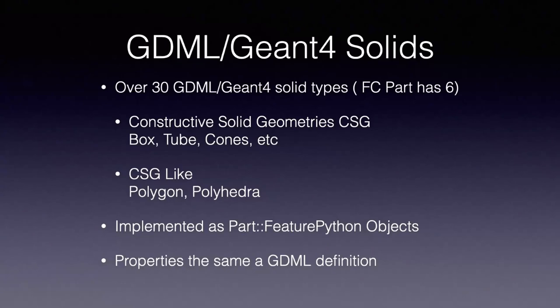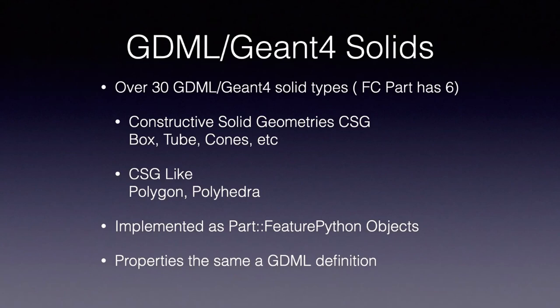Looking at GDML solids, there are over 30 solid types. FreeCAD's part workbench just has six. Constructive solid geometry — things like box, tube, cones, etc. — make up the majority of that 30. There are some CSG-like types such as Polygon and Polyhedra. In the case of the workbench, these are all implemented using FreeCAD's part feature Python objects, and the object properties are the same as the GDML definition. So you can change a property through the properties editor and things are instantly changed in the display.